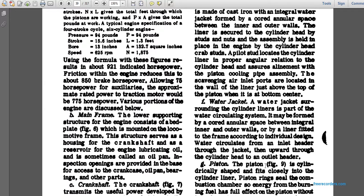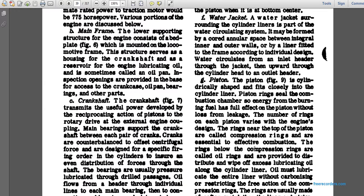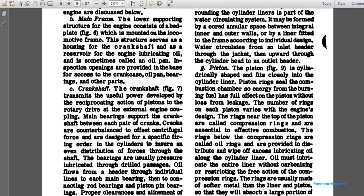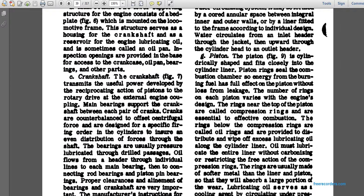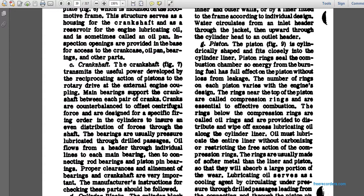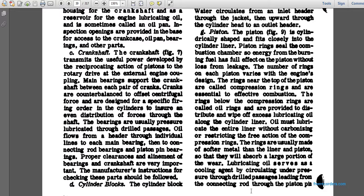Water circulates from the inlet, through the water jacket, then through the cylinder head to the outlet. The piston fits closely within the cylinder, and piston rings seal the combustion chamber so that energy from burning fuel is fully applied to the piston without leakage. The rings near the top of the piston are called compression rings and are essential for effective combustion. Rings below these are called oil rings, which distribute and wipe off excess lubrication oil. The rings are usually made of soft metal so they absorb wear, while lubricating oil serves as a cooling agent circulated through drilled passages from the connecting rod through the piston pin.